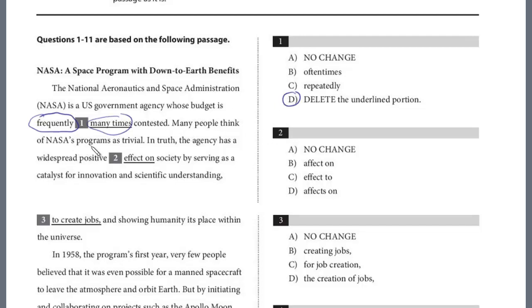Many people think of NASA's programs as trivial. In truth, the agency has a widespread positive effect on society by serving as a catalyst for innovation and scientific understanding. So question two, the agency has a widespread positive effect on society. If you look at the choices, this is really a diction question. They're testing the correct spelling of a word. We see effect with an E, affect with an A. These are homophones, words that sound alike but are spelled differently and have different meaning. Effect with an E is a noun. Affect with an A is a verb. You have to ask yourself, what part of speech do you want? It has a widespread effect on society. We definitely want a noun here, so it's an effect.